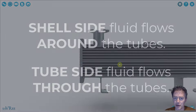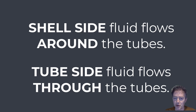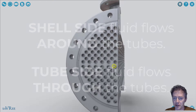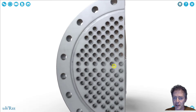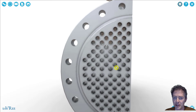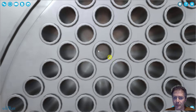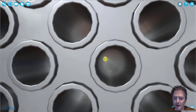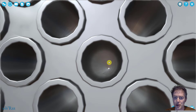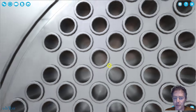The fluid that flows around the tubes is called the shell side fluid, so it makes sense that the fluid flowing through our tubes is called the tube side fluid. These tubes have nothing within them — we can just pass our fluid through the tubes from one end to the other.